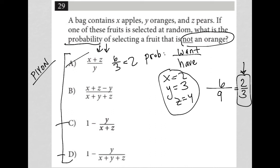B would be X plus Z minus Y over X plus Y plus Z, which is 6 minus 3, so it would be 3 over X plus Y plus Z, which is 9. So that's 1 third, not 2 thirds. That's out.